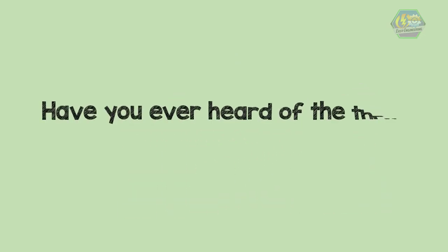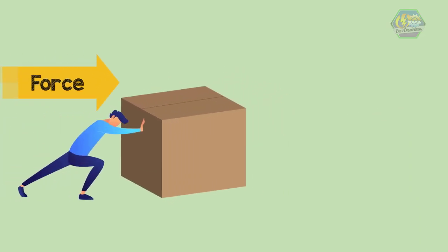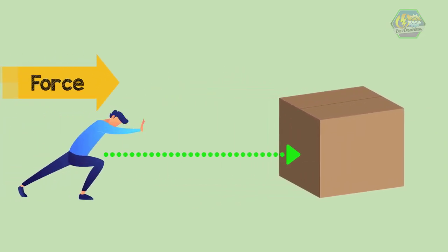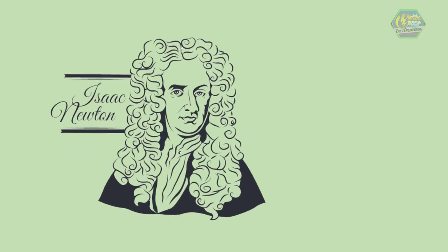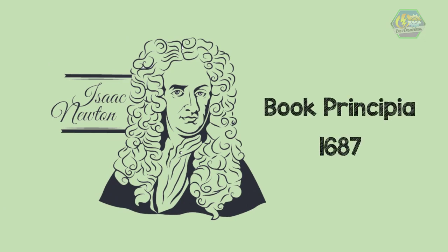Have you ever heard of the three laws of motion? Here is a quick history about the three laws. The laws of motion describe the relationship between the forces acting on a body and the motion of that body. These laws were first formulated by English physicist Sir Isaac Newton and published in his book Principia in 1687.